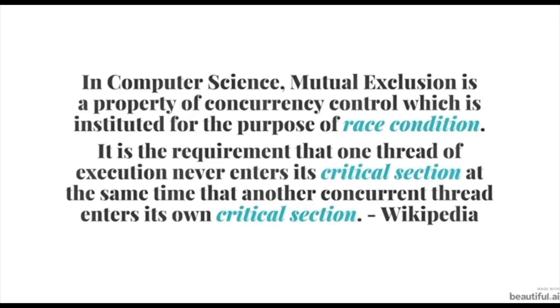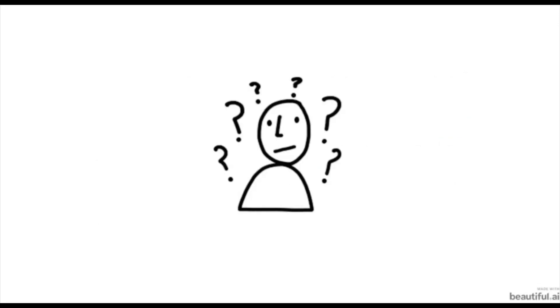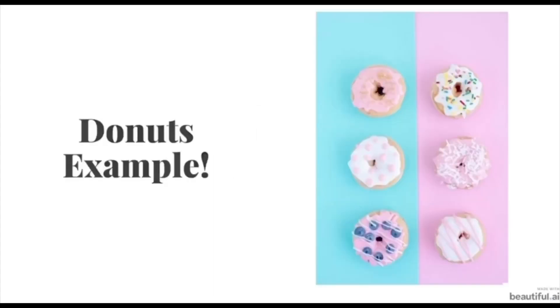According to Wikipedia, mutual exclusion is a property of concurrency control which is instituted for the purpose of race condition. It is the requirement that one thread of execution never enters its critical section at the same time that another concurrent thread enters its own critical section. That was pretty confusing, but don't worry — I'm going to go over an easy example to help you understand this definition.